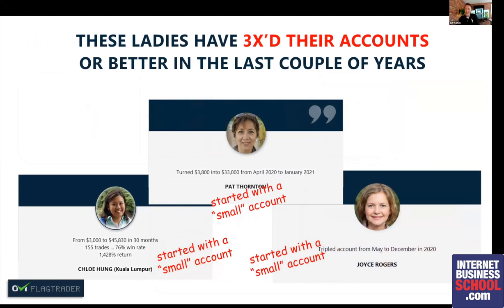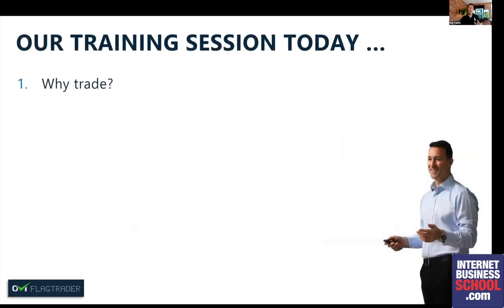These three ladies have all started with small accounts. Pat turned three thousand eight hundred dollars into thirty-three thousand dollars — that's in nine months. Chloe turned three thousand dollars into almost forty-six thousand dollars and counting, which completely changed her life. Joyce, up in Lincolnshire, tripled her account from May to December last year, starting with a small amount. I'm here to give you encouragement that this can be done, and lots of people are doing it by following certain procedures.